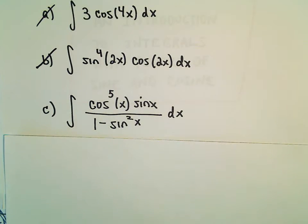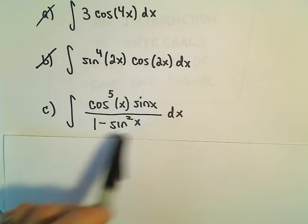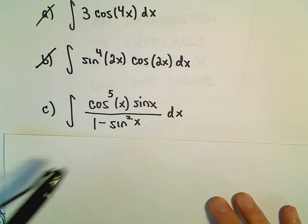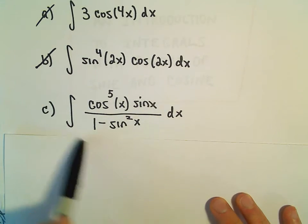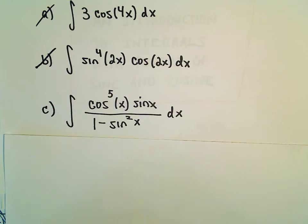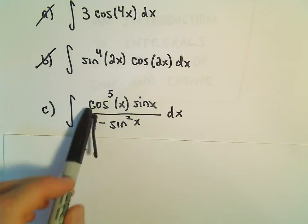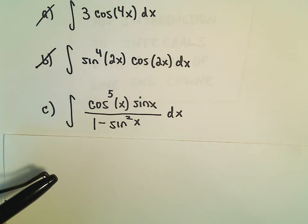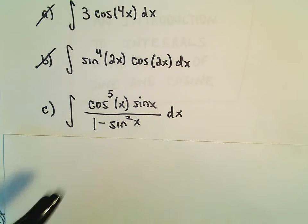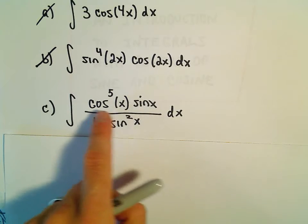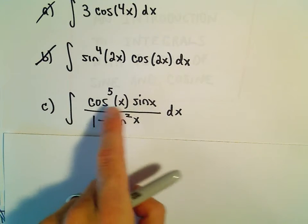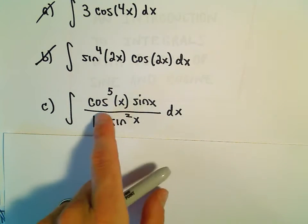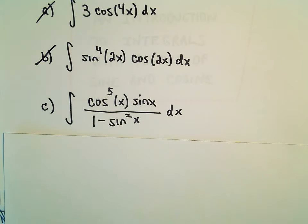Usually when I see a problem like this, the first thing I think is: do I just know it? Well, certainly I don't just know it. If there's a lot of trig floating around, which kind of in this case there is, I think: are there any trig identities that are going to sort of clean it up and simplify it? And then after that, I see cosines and sines, and those are derivatives, so that makes me think maybe a u-substitution at some point.